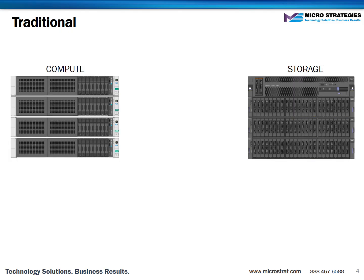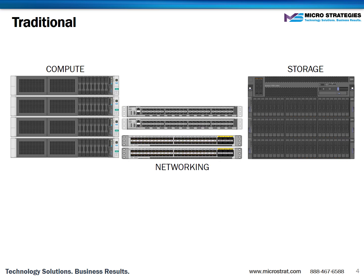First let's take a look at traditional infrastructure. In this topology your compute, storage, and networking environments are distinct entities. Sometimes the storage resides within the servers themselves, but it's still considered traditional because the disks within each server are not pooled and are not managed centrally. One of the benefits of this kind of environment is that you get to pick the vendor of your choice for each tier. In this example we see HP servers, IBM storage, and Cisco networking. If this customer chooses to change the server vendor they could do so without any other disruption to the environment.